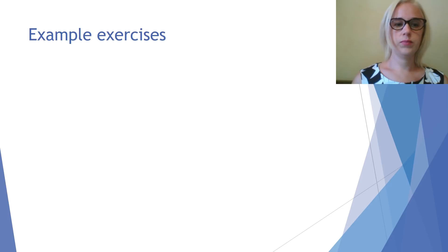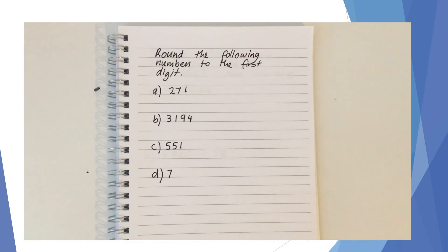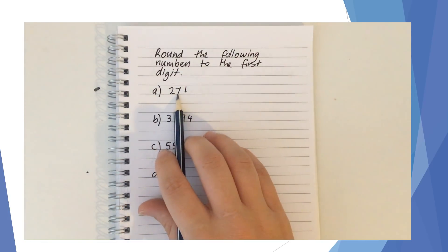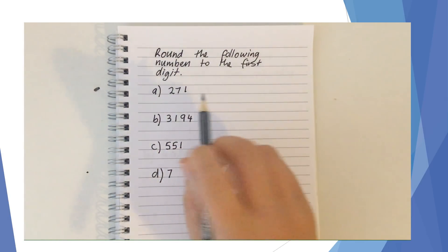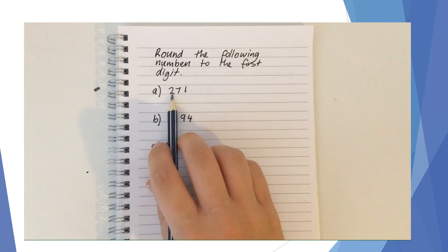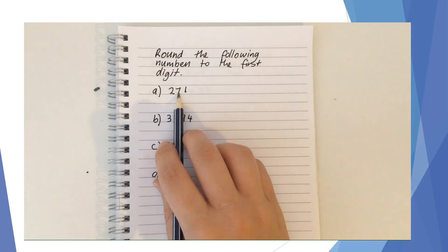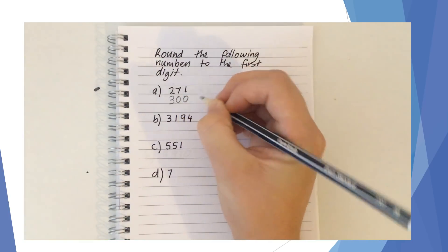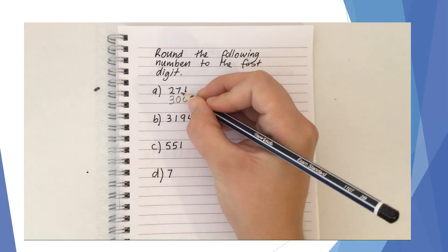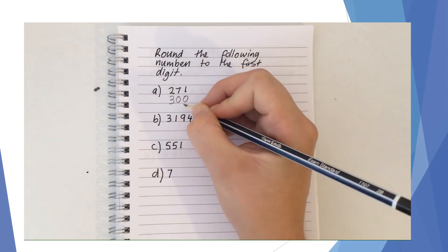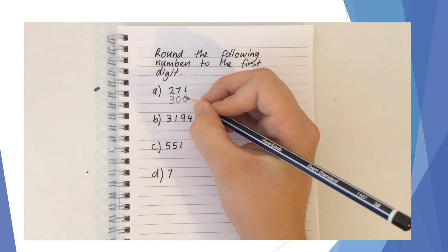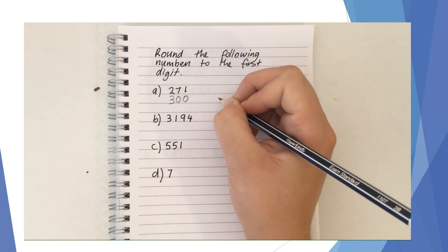Now we're going to look at some examples. We've been asked to round the following numbers to their first digit. For 271, we look at the second digit, which is 7 — more than 5 — which means we need to take it up. So we take that 2 up to 3 and put zeros afterwards, giving 300. Then check: is 271 closer to 300 or 200? Visualizing on a number line or with base-10 blocks, 271 is closer to 300, so our answer is reasonable.